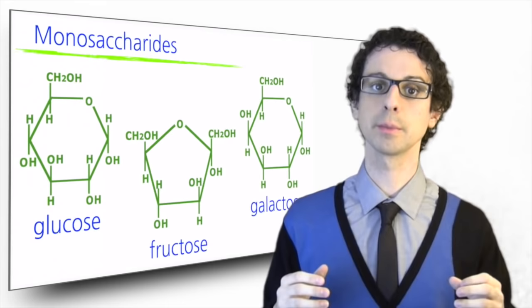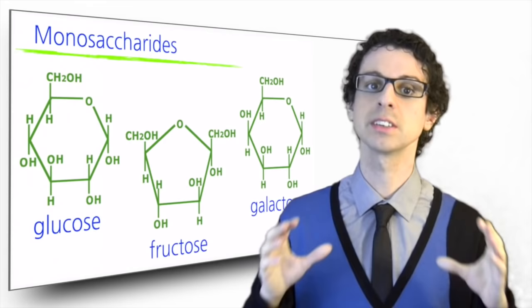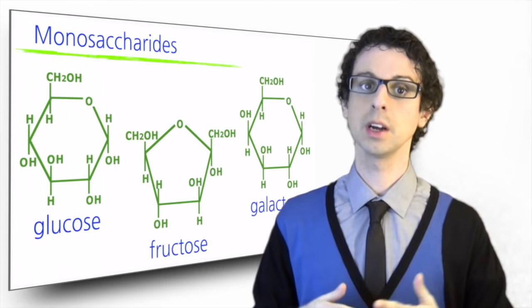The two other monosaccharides are fructose and galactose. As you can see, they contain the same six atoms of carbons and the same atoms of oxygen and hydrogen, but they are arranged in a slightly different way, and this is enough to give them different properties.